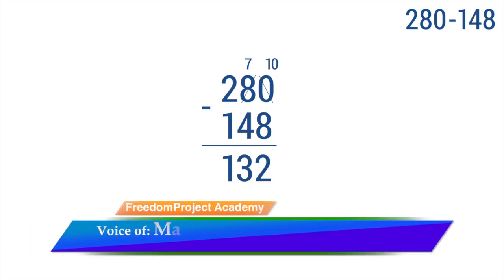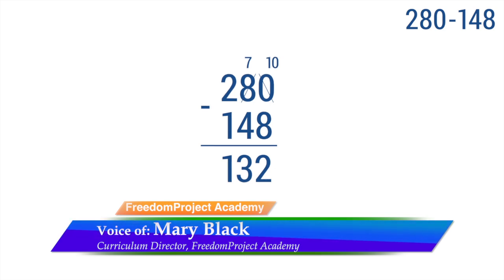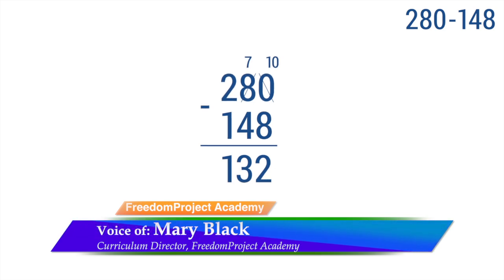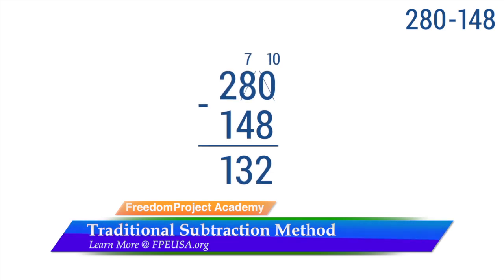So take a look as Mary Black walks you through traditional subtraction. Let's solve a subtraction problem using the traditional right-to-left method. The problem 280 subtract 148 is shown. Because 8 can't be subtracted from 0, we borrow a 10 from the 8 in 280, leaving us with 7, and we add 10 ones to the 0. Going from right to left, we subtract 8 from 10, 4 from 7, and 1 from 2 to get the difference of 132.